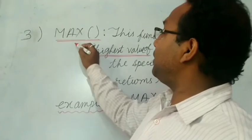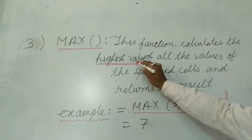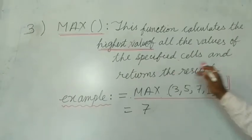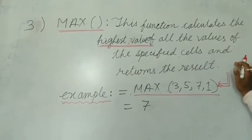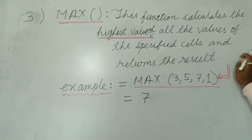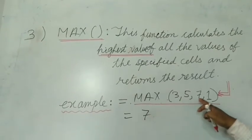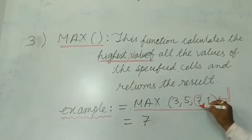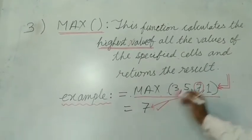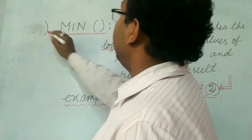The next function is MAX. This function calculates the highest value of all the values of the specified cells and returns the result. In a range — either a row or a column — the highest value will be displayed. Example: =MAX(3,5,7,1) — among these the highest number is 7, which is displayed.